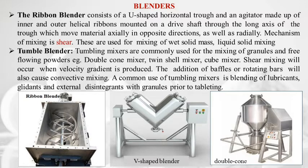Tumbling mixers are commonly used for mixing of granules and free-flowing powders — examples include double cone mixer, twin shell mixer, and cube mixer. The mechanism of mixing is shear; addition of baffles or rotating bars also causes convective mixing. A common use of tumbling mixer is blending of lubricants, glidants, and external disintegrants with granules prior to tableting.